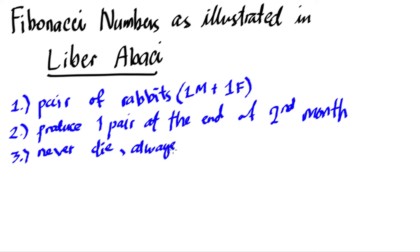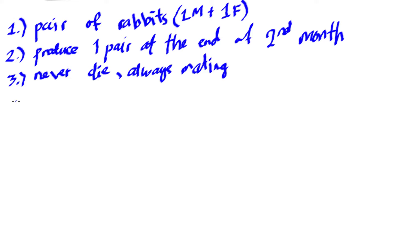So let's try to illustrate this on a table. Fibonacci posed the puzzle: how many pairs will there be in one year? I'm going to set up a table showing the months and the number of rabbits.